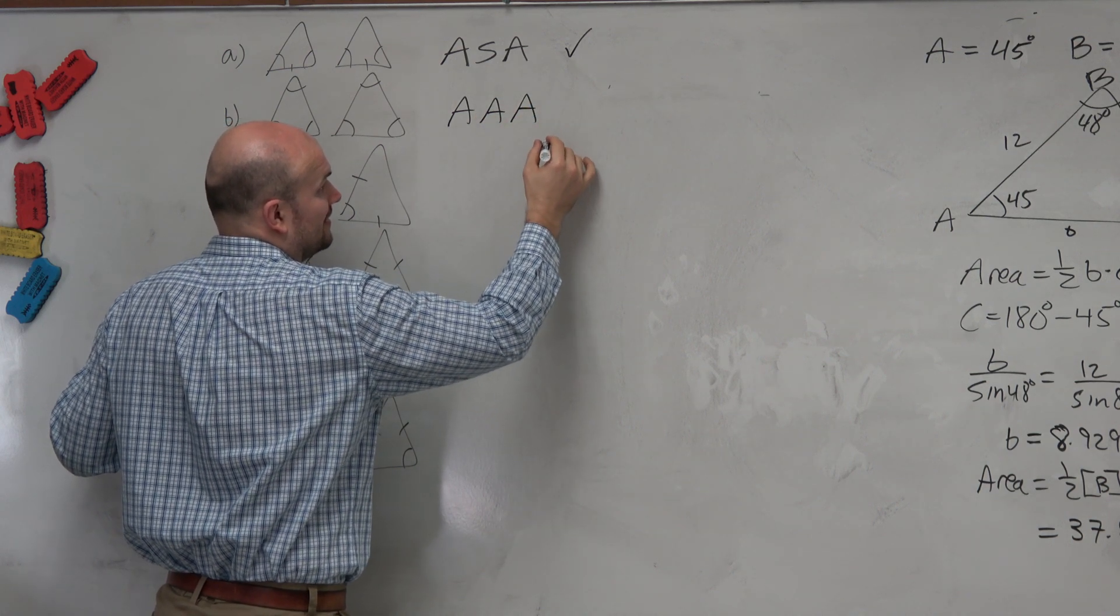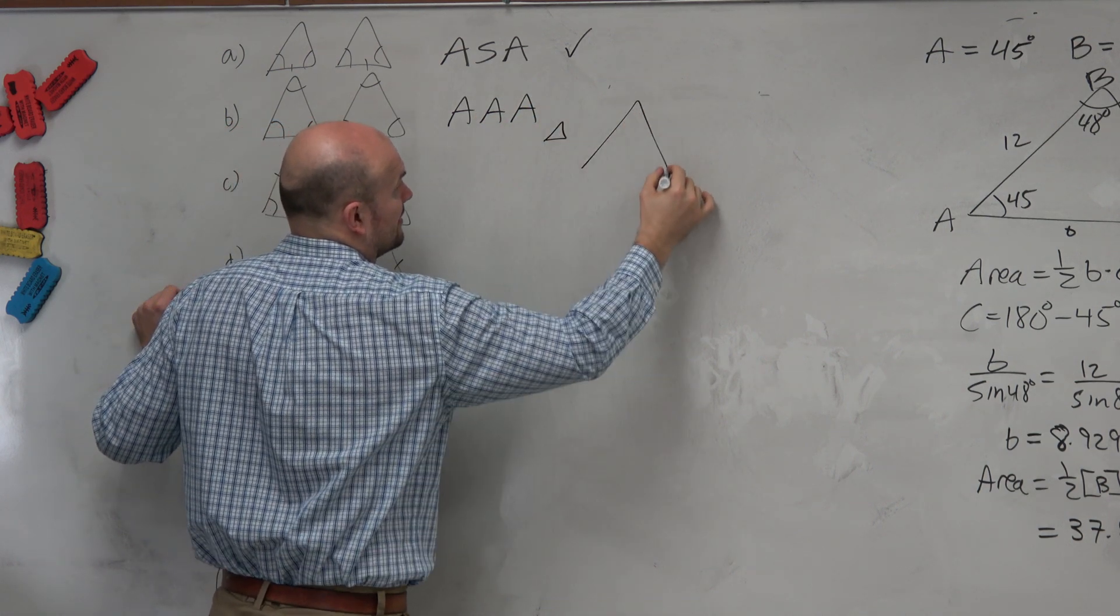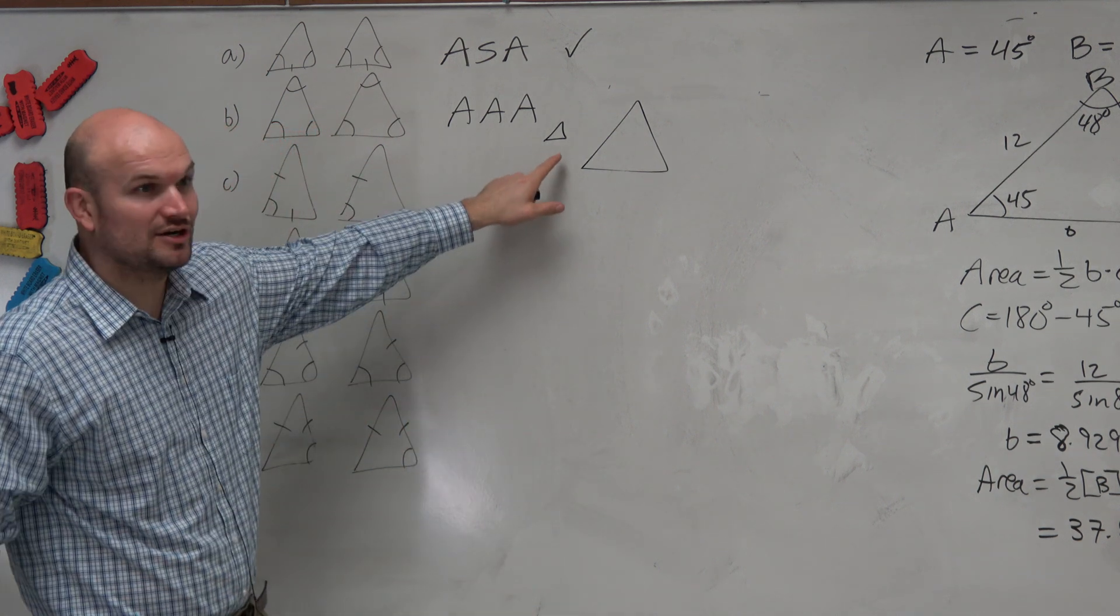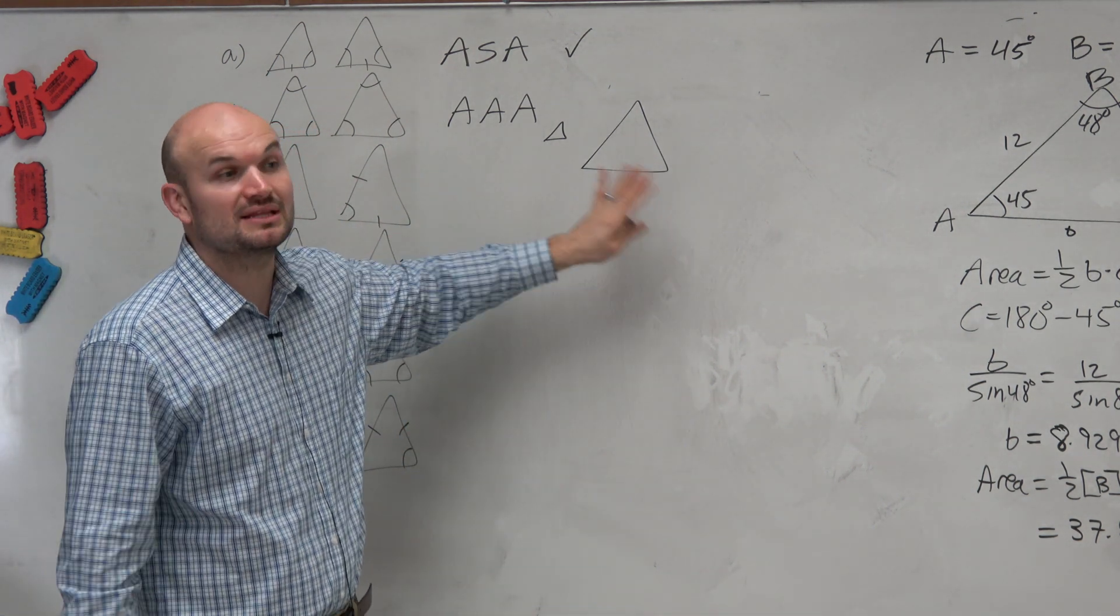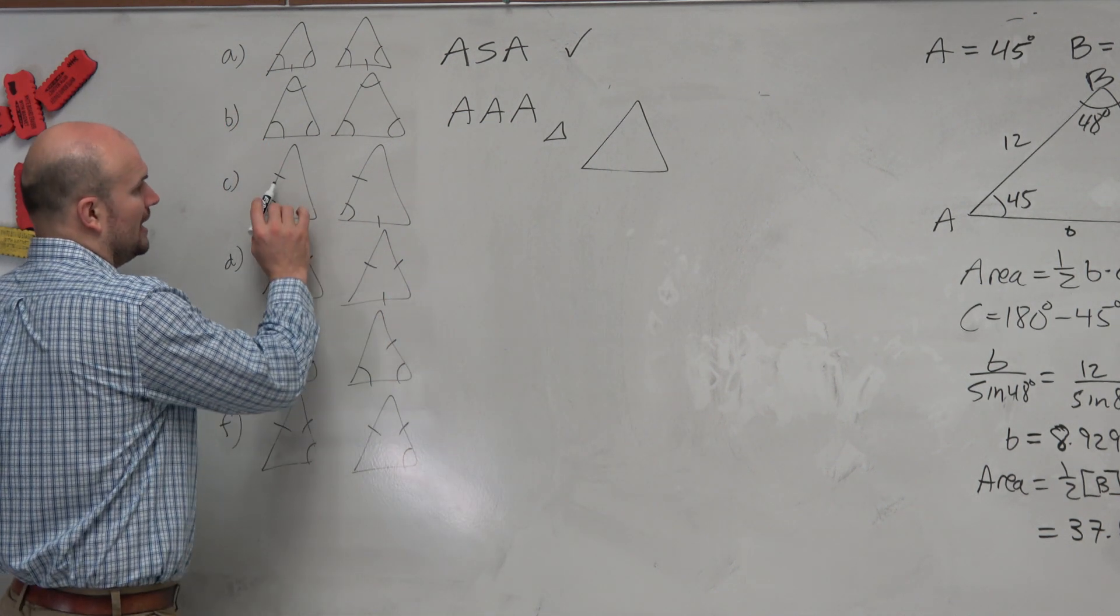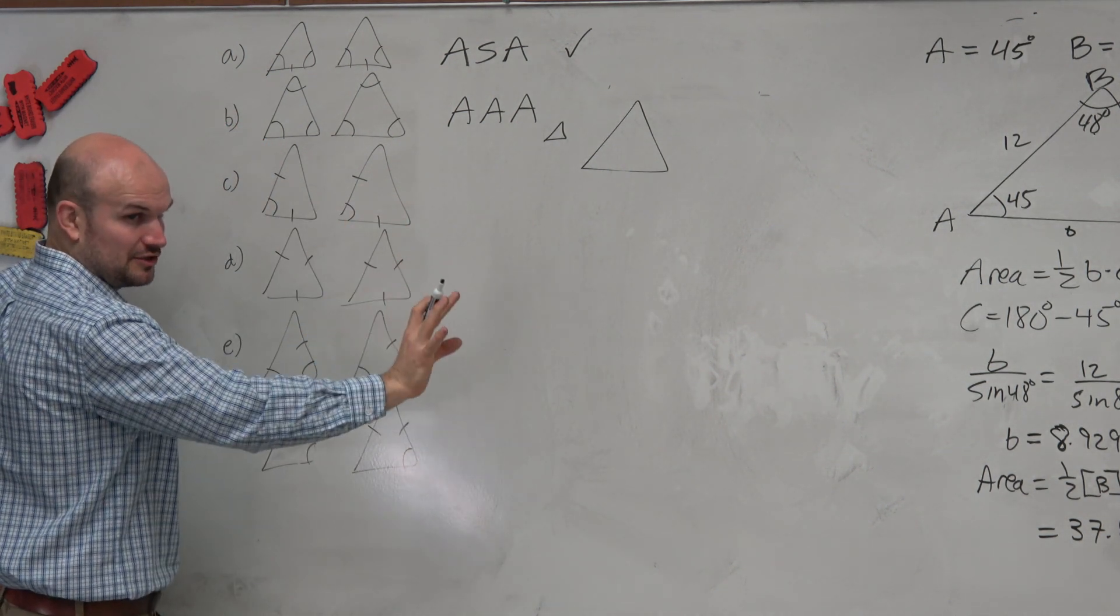No. Couldn't you have a 60-60-60 triangle, really small, and then a really big 60-60-60 triangle? Yeah. So that proves similarity, not congruency. OK? Right, ratio is similarity, not congruence.